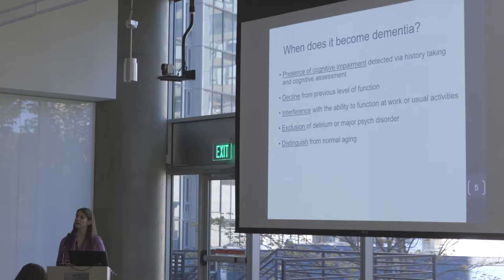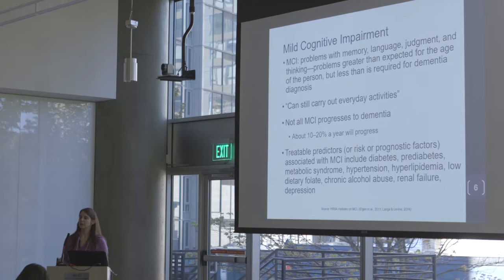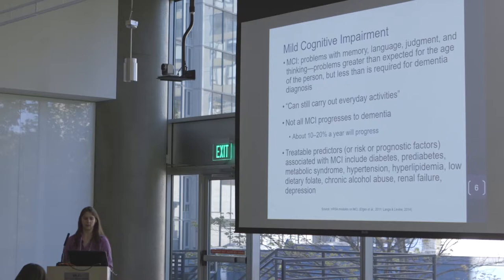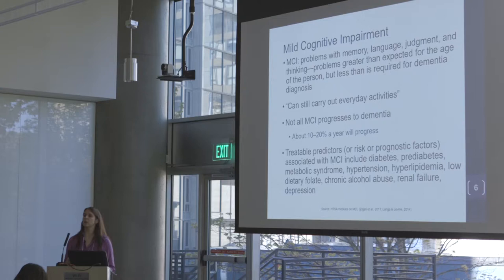Mild cognitive impairment is that middle ground between normal aging and dementia — problems with memory, language, and judgment greater than expected for age, but less than for dementia. When you have a patient sitting in front of you, it can be very difficult to answer when is it MCI and when is it dementia. And if you diagnose MCI in a patient, it might not progress to dementia — they may improve. That's important to stress with families.